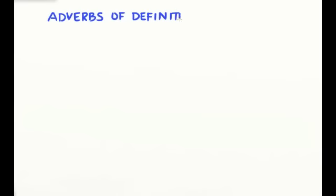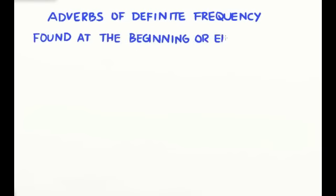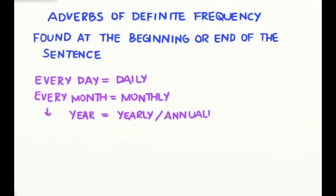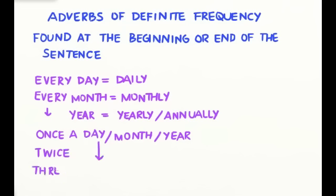Adverbs of definite frequency are a little different. They are found at the beginning or end of the sentence. Examples of adverbs of definite frequency are expressions like every day, daily, every month, monthly, every year, yearly, and so on.